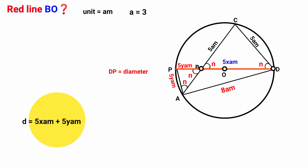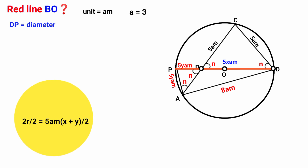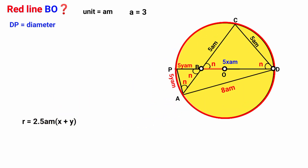From here, 5A meters is common, so we factor it out. It is 5A meters times (X + Y). Now diameter equals 2 radii, so 2R equals 5A meters times (X + Y). Divide both sides by 2: 5 divided by 2 is 2.5. That is, the radius of this circle is 2.5A meters times (X + Y).